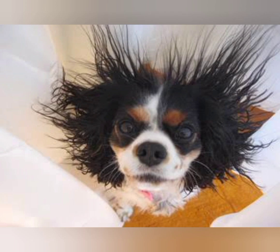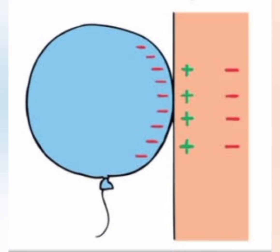When you rub a balloon against your clothes and it sticks to the wall, you are adding a surplus of electrons — negative charges — to the surface of the balloon. The wall is now more positively charged than the balloon. As the two come in contact, the balloon will stick because of the rule that opposites attract, positive to negative.